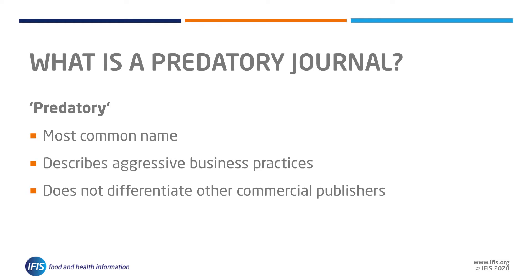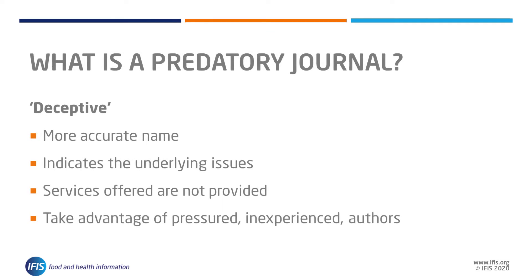Predatory is the most popular term used to describe these journals. This term has stuck because it sounds catchy, but it does not appropriately differentiate these journals from other commercial publishers. Deceptive is the more accurate description that indicates the underlying issues and the key unethical behaviors exhibited by these titles — they do not provide the services they say they do.